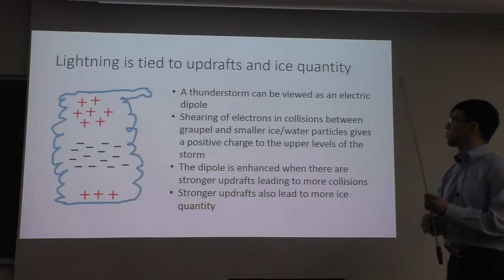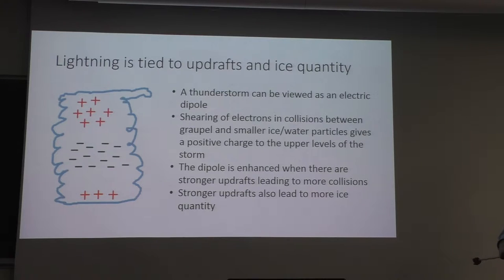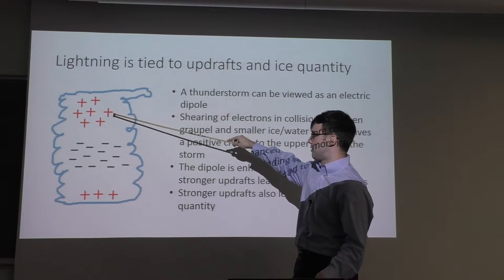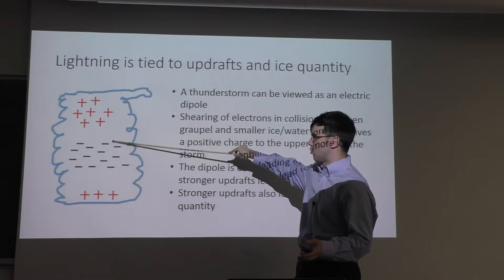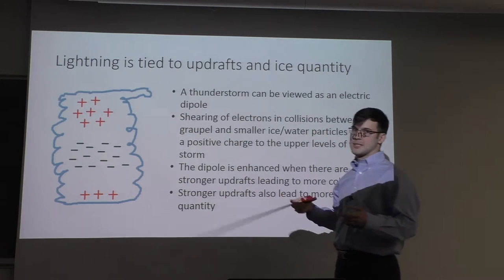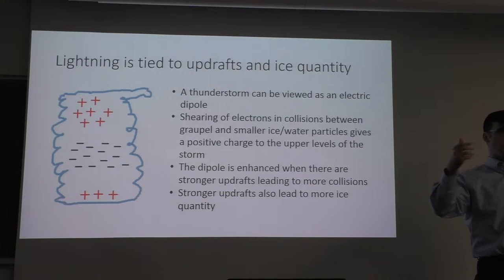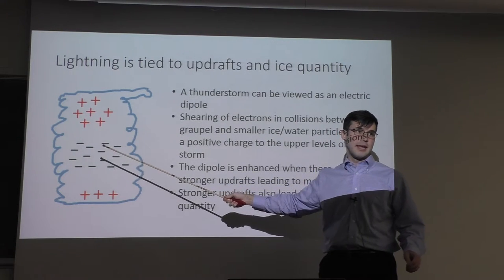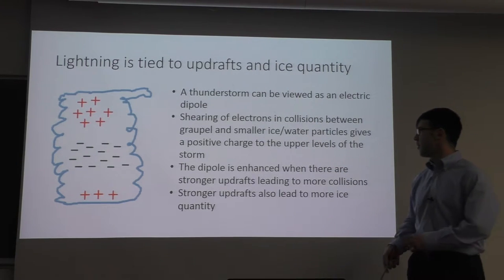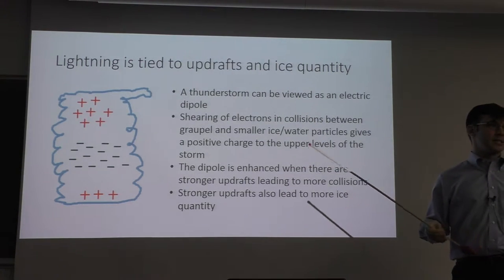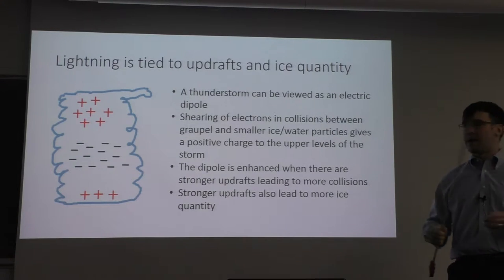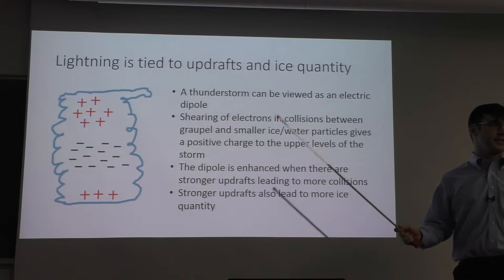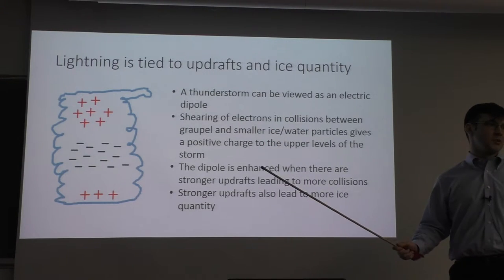Lightning is tied to updrafts. A thunderstorm is approximately an electric dipole — negatively charged in the lower and mid-free troposphere, positively charged in the upper free troposphere. That's because falling graupel collides with rising water vapor and water molecules, shearing off electrons: water vapor molecules become positively charged, the graupel enormously negatively charged. If you have an electric dipole, you get lightning. The dipole is naturally enhanced with a faster rate of collision, so stronger updrafts give a lightning enhancement. More ice also enhances lightning, and ice is related to supersaturation, which is related to updraft velocity.